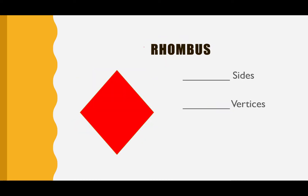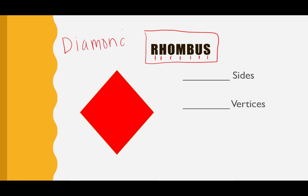Our last shape is called the rhombus. This kind of looks like another shape — there's also another name for this shape. Let's go ahead and spell rhombus first: R, H, O, M, B, U, S. Rhombus. The other name for our shape is also called a diamond: D, I, A, M, O, N, D. Diamond.